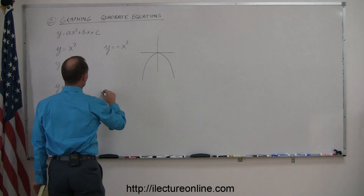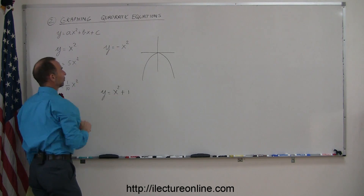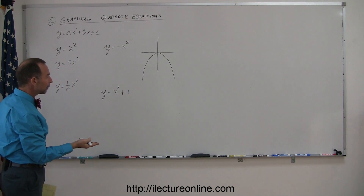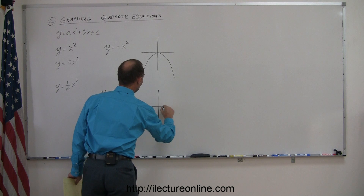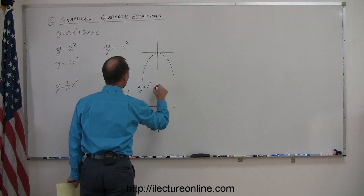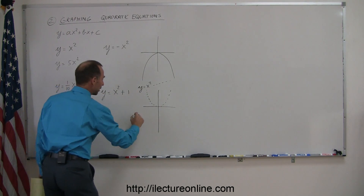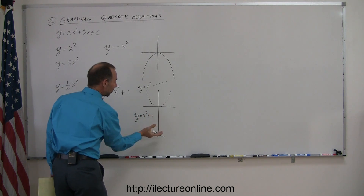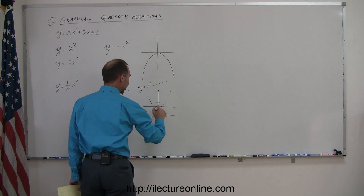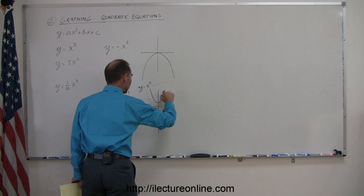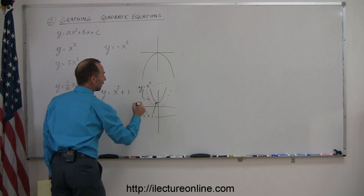What if you have y equals x squared plus one? Here you don't have a b but you do have c equals one. That would simply raise the parabola up by one unit. If y equals x squared is shown as a dashed line, then y equals x squared plus one, shown as a solid line, raises the whole parabola up one unit.